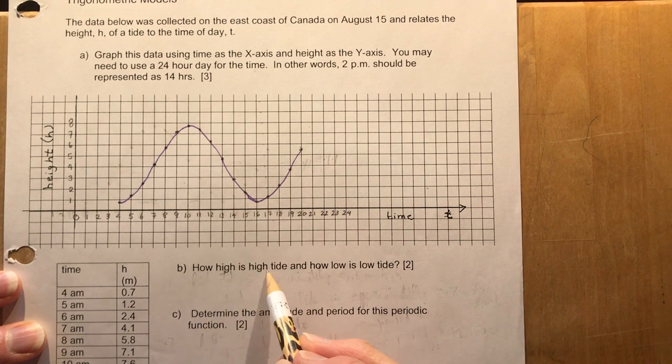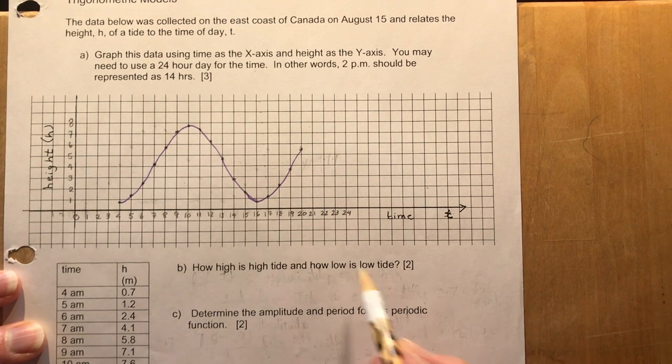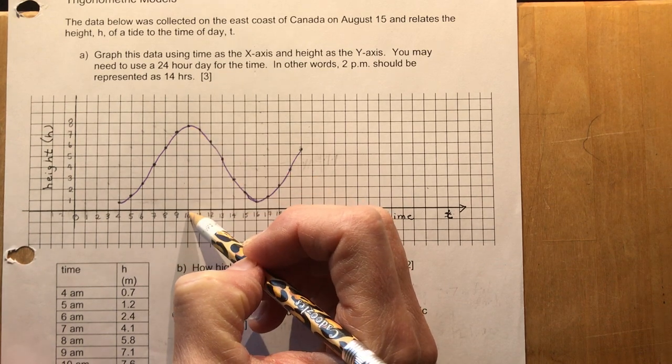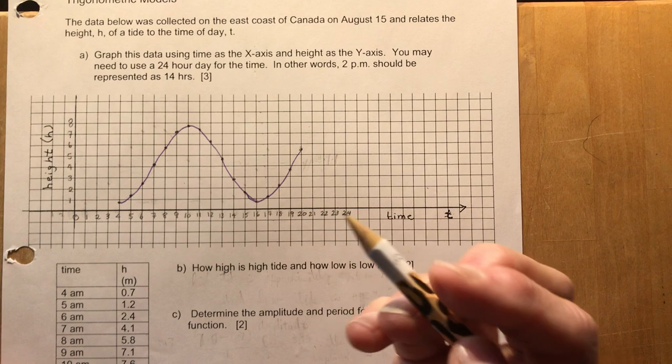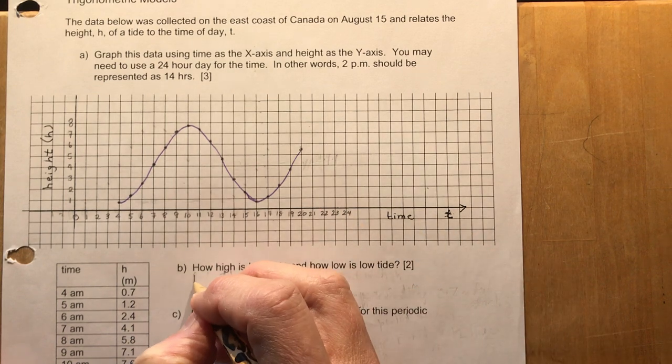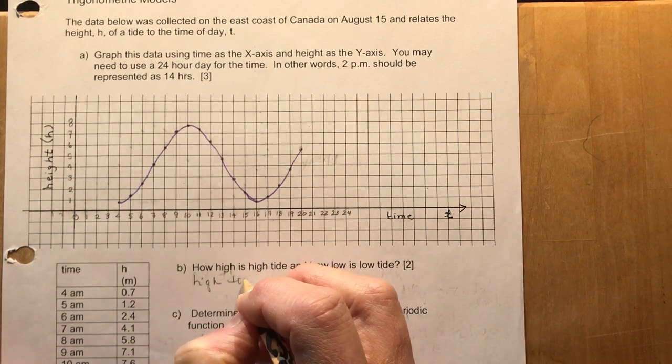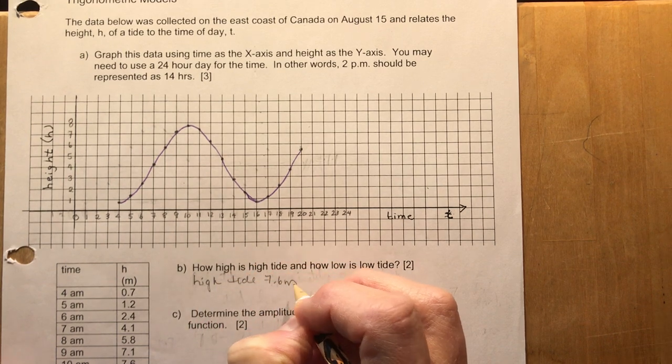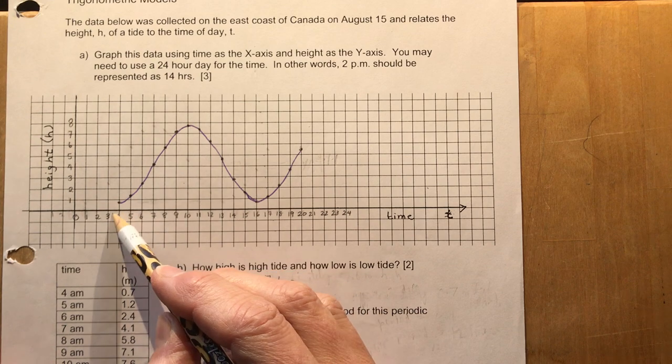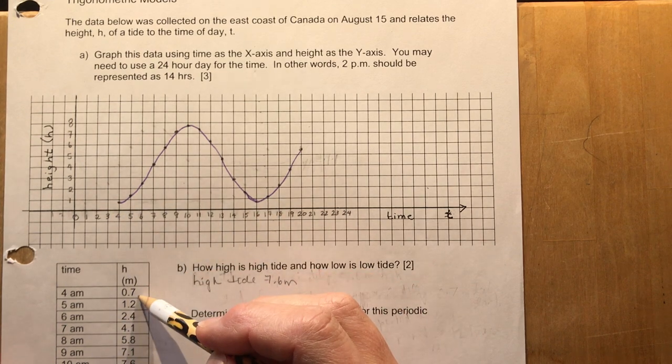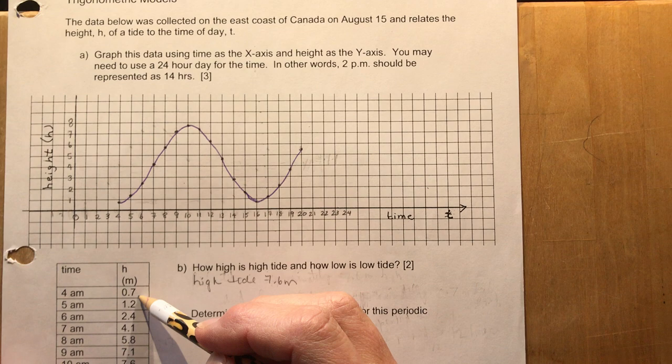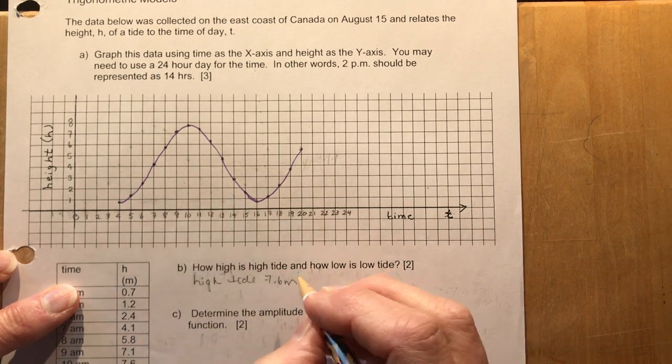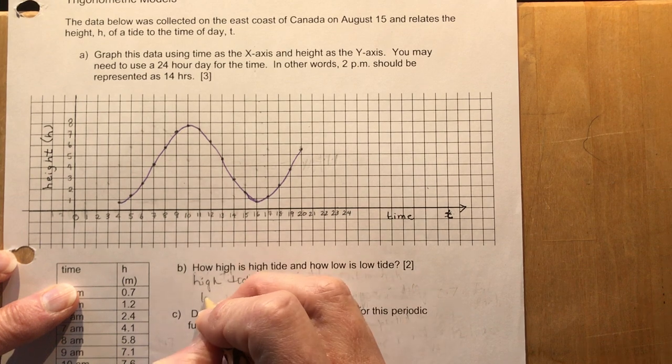How high is the high tide and how low is low tide? Well that's pretty easy. You just look at the data. The data for 10 o'clock in the morning was 7.6, so high tide is 7.6 meters. Low tide is either 4 or 16. If you look at 4 AM it's 0.7 and 16 hours is 0.8, so 0.7 would be the lowest at 0.7 meters for low tide.